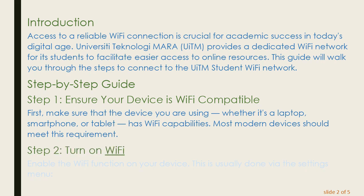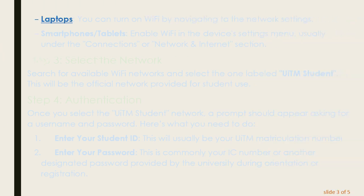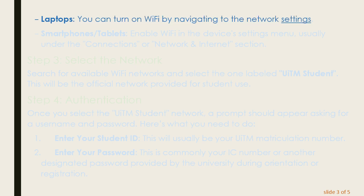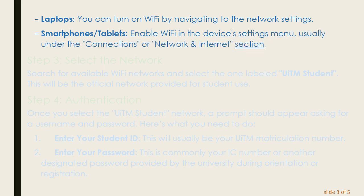Step 2: Turn on Wi-Fi. Enable the Wi-Fi function on your device, usually via the Settings menu. For laptops, navigate to the Network Settings. For smartphones and tablets, enable Wi-Fi in the device's Settings menu, usually under the Connections or Network and Internet section.